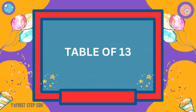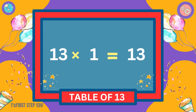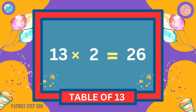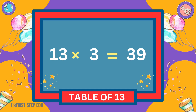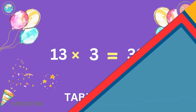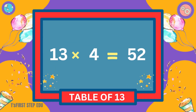Table of 13. 13 ones are 13. 13 twos are 26. 13 threes are 39. 13 fours are 52.